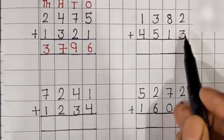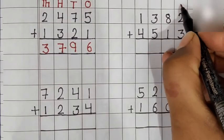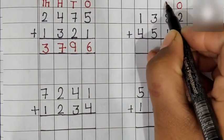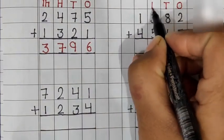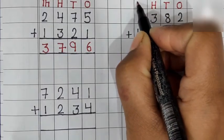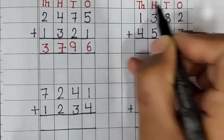Let's do one more example. This is the 1s place, 10s place, 100s place, and 1000s place.